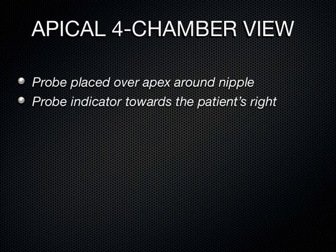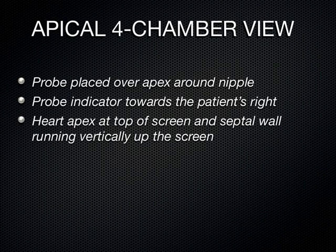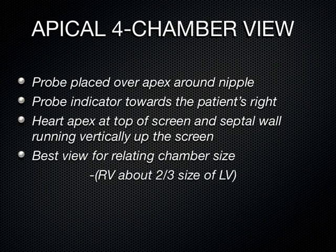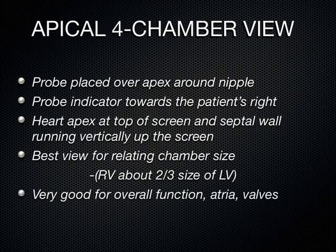You're going to place that transducer just inferior to where the nipple line is, lateral in that area by the nipple, with the indicator to the patient's right. Because you're placing the transducer right on the patient's PMI — remember during physical exam skills, you'd roll a patient left lateral decubitus, stick a pillow under the right shoulder to bring the heart to the chest wall. That's exactly what you do here every time you do an apical four chamber view. You'll see the apex at the very top of the screen, the sound shooting straight down the barrel of the gun that is the heart. It's a great way to see that the RV is about two-thirds the size of the LV, gauge chamber size, overall function, the atria, and the valves.